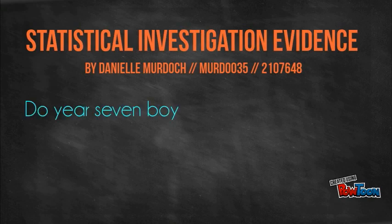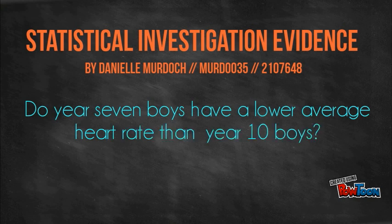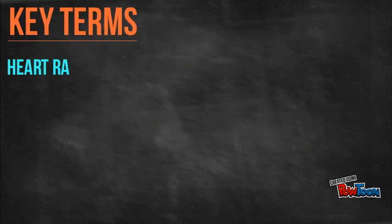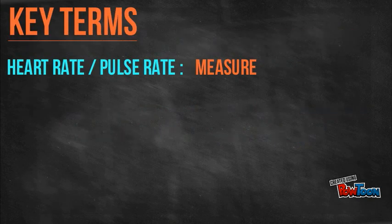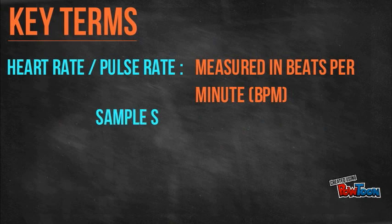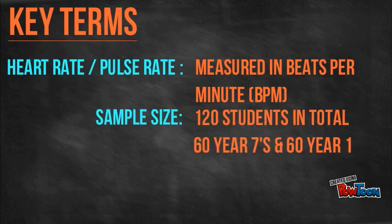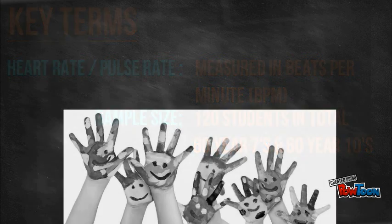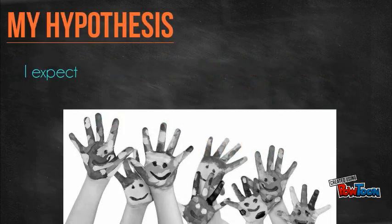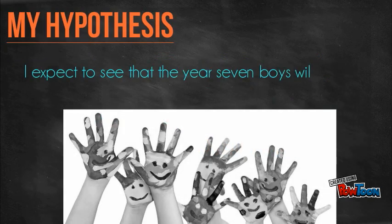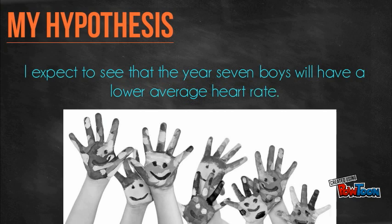Statistical Investigation Evidence: Do Year 7 students have a lower resting heart rate than Year 10 boys? Heart rate is measured by how many times the heart beats per minute. The sample size was 120 students split into 60 Year 7 boys and 60 Year 10 males. I expect to see that the Year 7 boys will have a lower average heart rate.